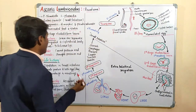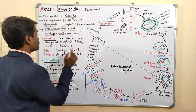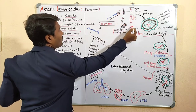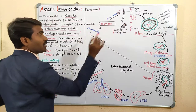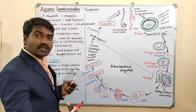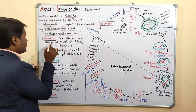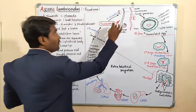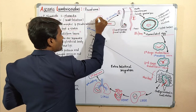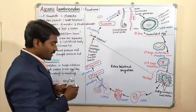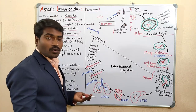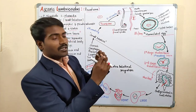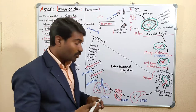Now let's talk about structure. The worm is a roundworm with an elongated, cylindrical body. Sexes are separate — male and female — which is called sexual dimorphism. It is called a roundworm because if we take a transverse section, it gives a round appearance.